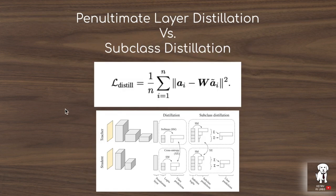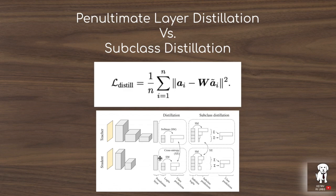The most similar technique to subclass distillation is penultimate layer distillation, where more information is transferred from teacher to student. One bottleneck of penultimate layer distillation is that the dimensionality of the penultimate layer in the student network is likely lower than the teacher's, requiring a weight matrix W to project the student's penultimate layer into matching dimensions. Subclass distillation generally does a better job of separating classes using the contrastive loss and producing a more semantic distribution to train the student network than penultimate layer distillation.